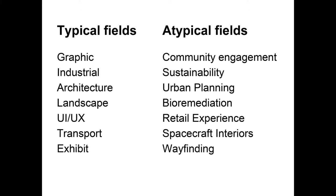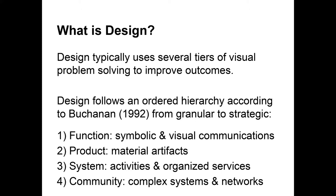Each of these fields is also experiencing certain levels of specialization. Some atypical fields emerging within them include community engagement specialists out of graphic design, sustainability specialists in industrial design, and urban planners emerging out of architecture schools. So what is design? Design uses several tiers of visual thinking and problem solving to improve outcomes and create new things — new devices, artifacts, and processes.